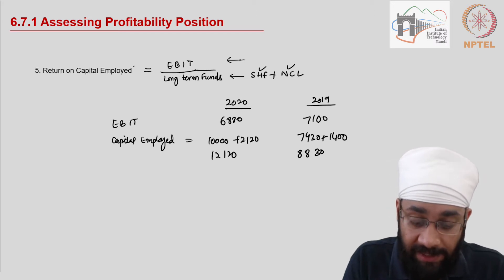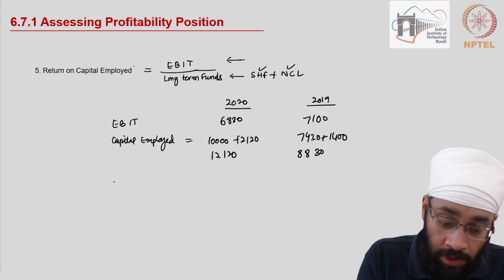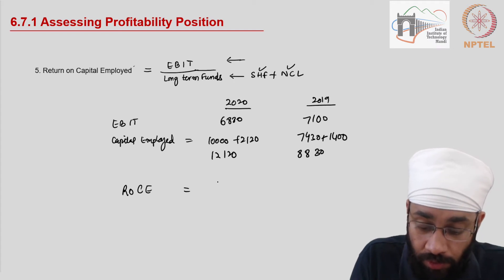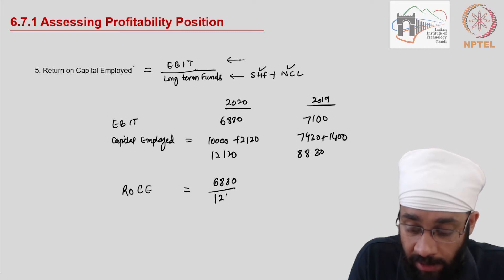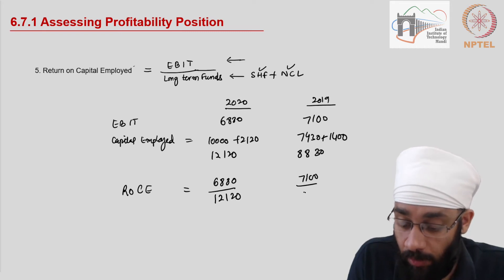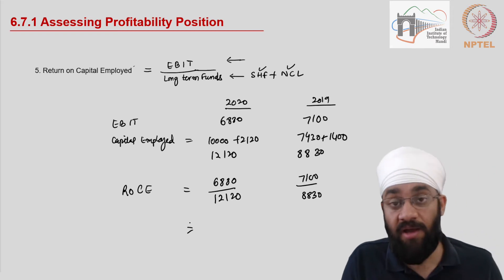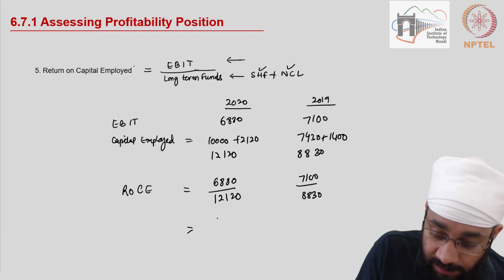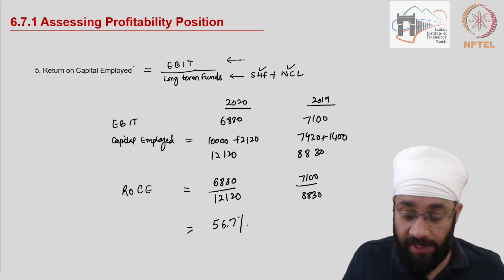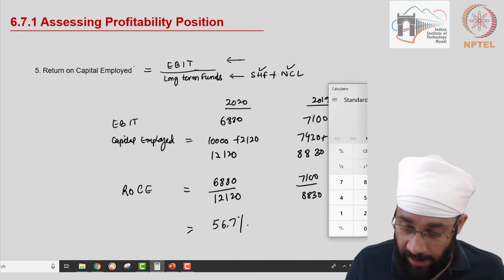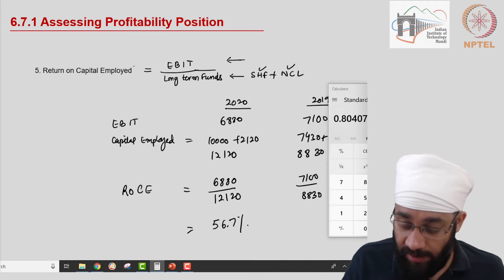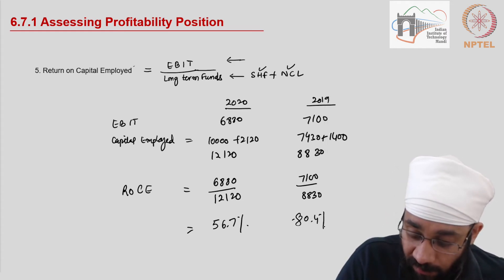Now we calculate Return on Capital Employed: EBIT divided by capital employed. For 2020: six thousand eight hundred and eighty divided by twelve thousand one hundred and twenty equals fifty-six point seven percent. For 2019: seven thousand one hundred divided by eight thousand eight hundred and thirty equals eighty point four percent. This seems like a highly profitable business.